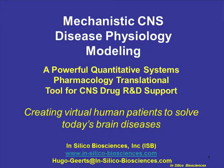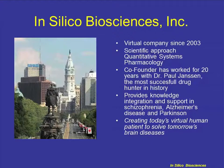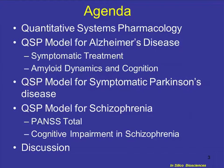Hello everybody, thanks for listening in. I'm going to talk today about mechanism-based CNS disease physiology modeling, with the idea of actually creating a virtual human patient to solve today's brain diseases. I've worked at In Silico Biosciences, located in the beautiful city of Philadelphia, since 2003. I had the honor of working with Dr. Paul Janssen for about 20 years, which I think represents the most successful drug company in history. Our business model is to provide knowledge integration and support in schizophrenia, Alzheimer's disease, and Parkinson's disease. Today's talk will cover the concept of quantitative systems pharmacology as we see it within the company, and go through examples for Alzheimer's disease, Parkinson's disease, and schizophrenia.